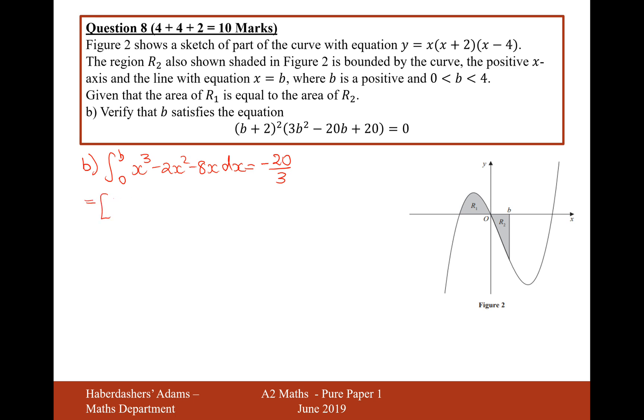Let's do the integration. It'll be 1 quarter x to the 4 minus 2 over 3 x cubed minus 4x squared, integrated between 0 to B, and that equals minus 20 over 3. Substitute it in: 1 quarter B to the power of 4 minus 2 thirds B cubed minus 4B squared. Substitute 0 in, which gives you nothing. That equals minus 20 over 3.